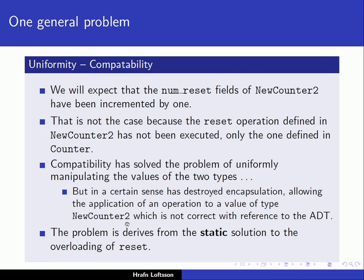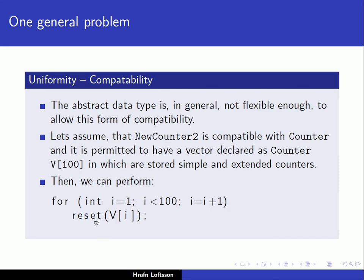The main take-home point is that we are not able to execute the reset function in new counter 2 — only the reset function in counter — because of the static resolution of function overloading. The compiler statically associates the function called reset to the code in the counter object, even though we would want to support both counters and new counters in this array.